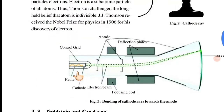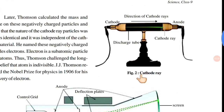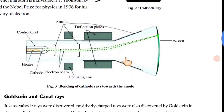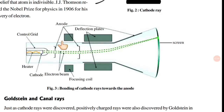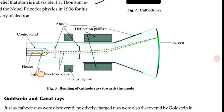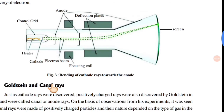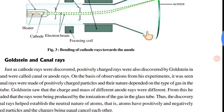Yahan par aapko ek chhota sa diagram diya hua hai — yahan par cathode ray ka example hai, aur doosra jo hai woh aapka bending of cathode ray ka example hai. Agar aap isko samjhenge toh dekhiye, yahan par ek screen laga hua hai, yeh bending hai. Yahan par ek control grid laga hua hai, andar mein ek heater hai. Yahan se cathode ray pass ho rahi hai, yeh dono aapka focusing coil hai aur yeh deflection plates hain. Jab yahan se cathode ray pass ho rahi hai toh deflect hoke bend hokar screen ki taraf ja rahi hai — yahan aapka electron beam hai.